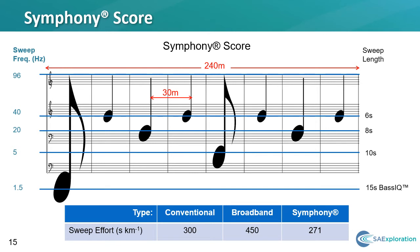The planned survey covered four octaves of bandwidth; the revised Symphony design increases this to six. As with the first test example, four sweeps comprise the eight-note or eight-VP score: a single 15-second, 1.5 to 96 hertz sweep; a single 10-second, 5 to 96 hertz sweep; two 8-second, 20 to 96 hertz sweeps; and four 6-second, 40 to 96 hertz sweeps. The VPs are spaced at 30 meters as opposed to the original 40 meters. The Symphony score is approximately 10 percent shorter compared to the planned conventional acquisition, whereas a full broadband sweep at each VP would increase the acquisition time by 50 percent over the conventional design.